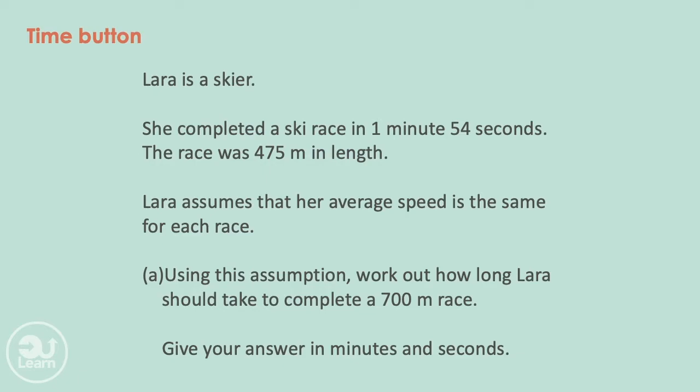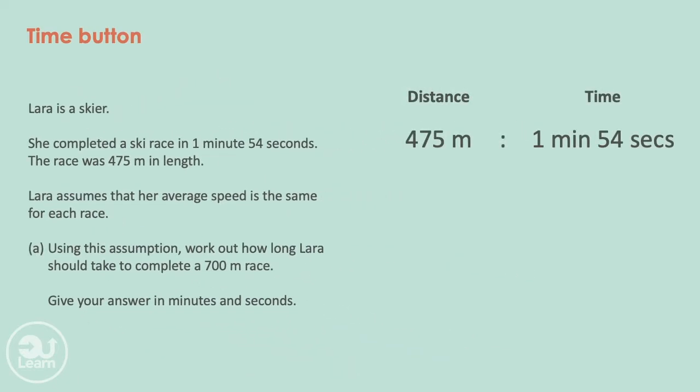We can use the unit ratio method to solve this question with the use of the time button. We lay out our question like so: 475 meters to 1 minute and 54 seconds. To get to 700 from 475, we divide by 475 to find the time it takes on average to run 1 meter and then multiply by 700. The same calculations are applied to the time, 1 minute and 54 seconds.